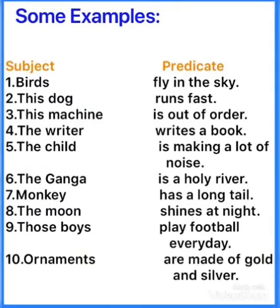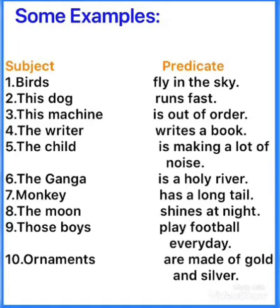Third: 'This machine is out of order' — ab yeh machine ke baare mein baat ho rahi hai, jo abhi kaam nahi kar rahi hai, jisne kaam karna band kar diya hai. So jo machine hai woh yahan pe subject hai. Fourth: 'The writer writes a book' — writer yahan pe a name of person, writes a book. So writer kya karta hai? Book write karta hai. So 'writes a book' is predicate. Fifth: 'The child is making a lot of noise' — baat kis ke baare mein ho rahi hai? About a child — the child is subject.